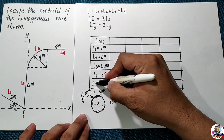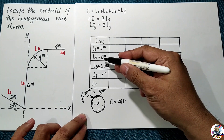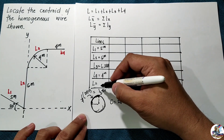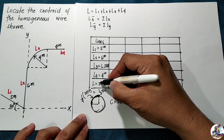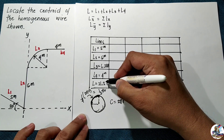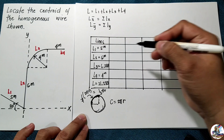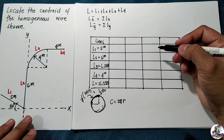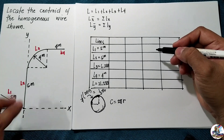Using the formula, the total length equals L1 plus L2 plus L3 plus L4, which gives a total length of 21.283 meters. Now let's find the x-distances of the centroid of each line with respect to the y-axis.